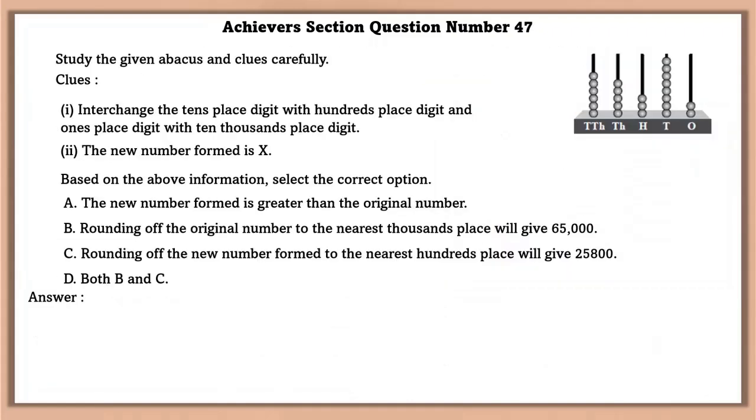Achievers section question number 47. Study the given abacus and clues carefully. Clues. Interchange the tens place digit with hundreds place digit and ones place digit with tens thousands place digit. Now first the number given in the abacus is 65382. Now after interchanging the digits, the new number formed is x. Now based on the information, we are going to now select the correct option. The new number formed is greater than the original number. This is false because the new number formed is lesser than the original number.